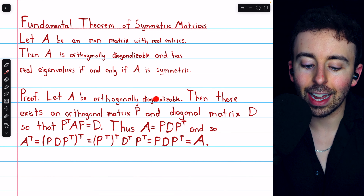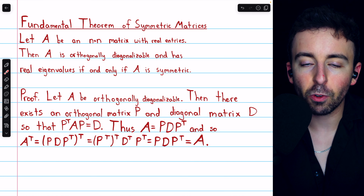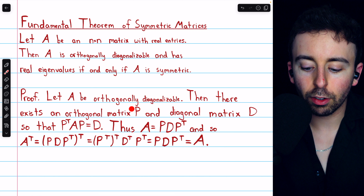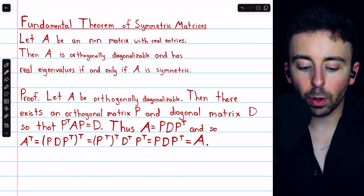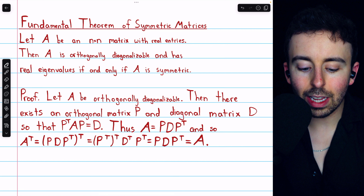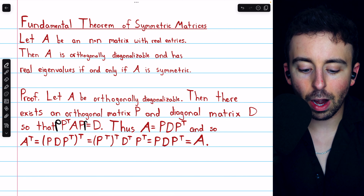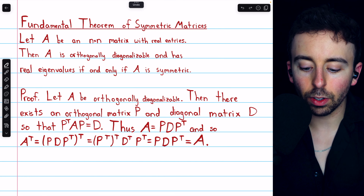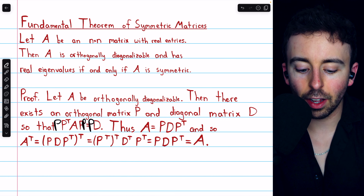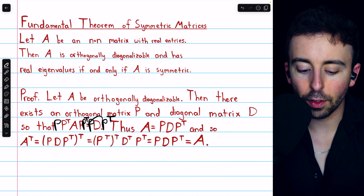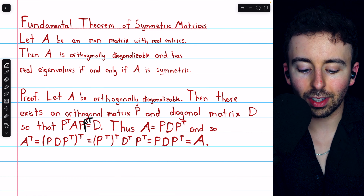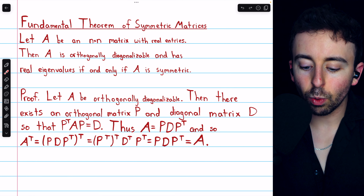First, we assume that A is orthogonally diagonalizable and prove it must be symmetric. If A is orthogonally diagonalizable, then by definition there must exist an orthogonal matrix P and diagonal matrix D so that P transpose AP equals D. If P transpose AP equals D, then we multiply on the left by P and on the right by P transpose to get A equals P times D times P transpose. On the right we have PDP transpose, and on the left the P inverse and P cancel out because P is orthogonal. So A equals PDP transpose.